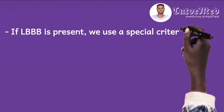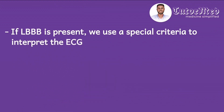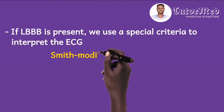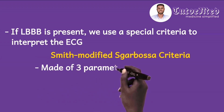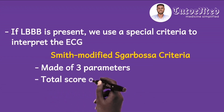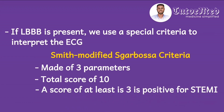If left bundle branch block is present, we use a special criteria to interpret the ECG for STEMI: the Smith Modified Sgarbosa Criteria. Originally called simply the Sgarbosa Criteria, Smith modified it to increase its diagnostic value. It is made up of three parameters and gives a total score of 10. A score of at least three is positive for STEMI. There will be another short video on the Smith Modified Sgarbosa Criteria, but note that when LBBB is present, this is the criteria to use.